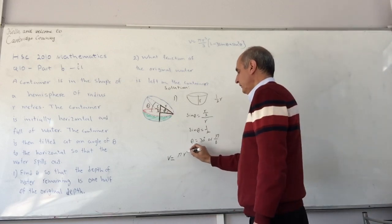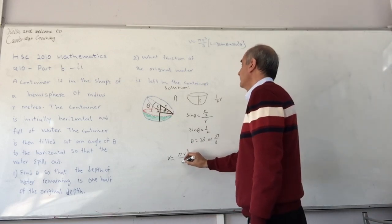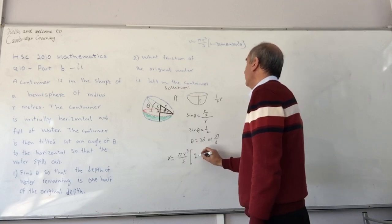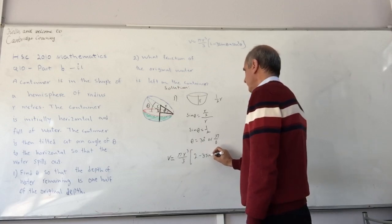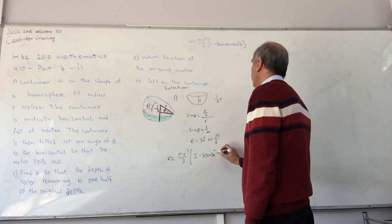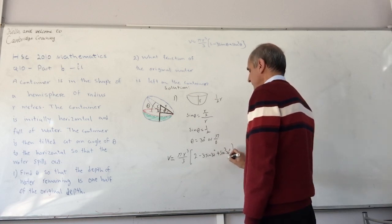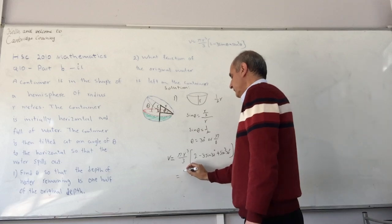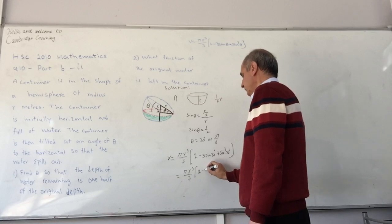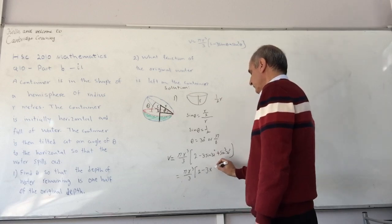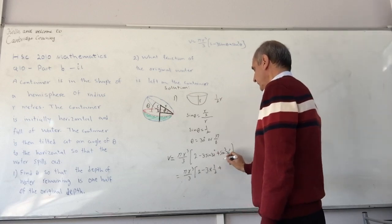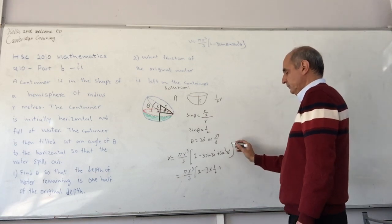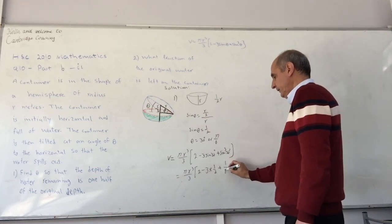V is equal to pi r cubed on 3, 2 minus 3 times sin 30, plus sin cubed, 30 degrees. That gives us pi r cubed on 3, 2 minus 3 times sin 30 is half, and sin 30 half cubed is 1 on 8.